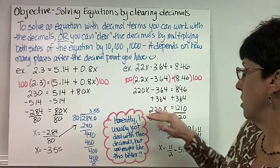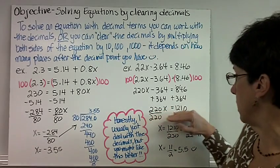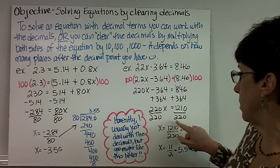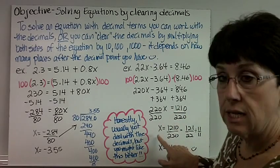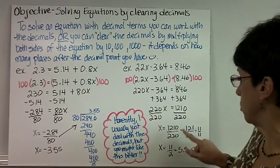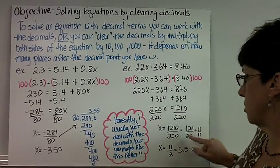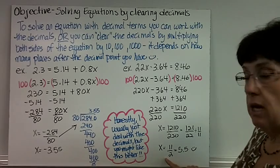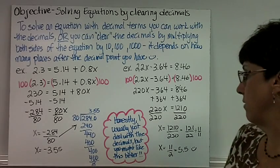Add 364 to both sides, we get 220x equals 1,210. Divide by 220, we get x equals 1,210 divided by 220. Well I just took off the zeros, and then I noticed, oh my gosh, 11 goes into both of them. So I divided by 11, and I got 11 halves, which is 5.5.